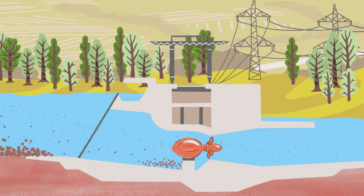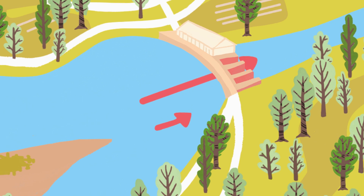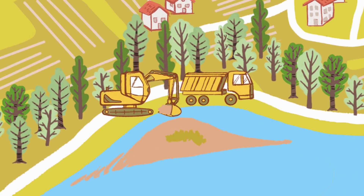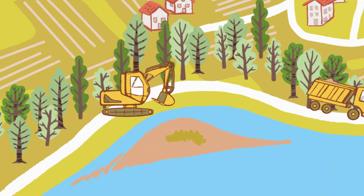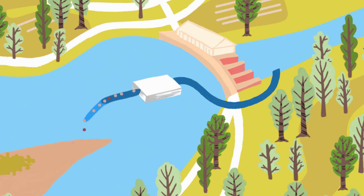This means sediments are transported through or around barriers in the river. A common measure is to excavate coarse bed load like big gravel and stones, which are then reintroduced into the river downstream of the barrier. Fine sediments and small gravel can be extracted with innovative methods like hydraulic dredging.